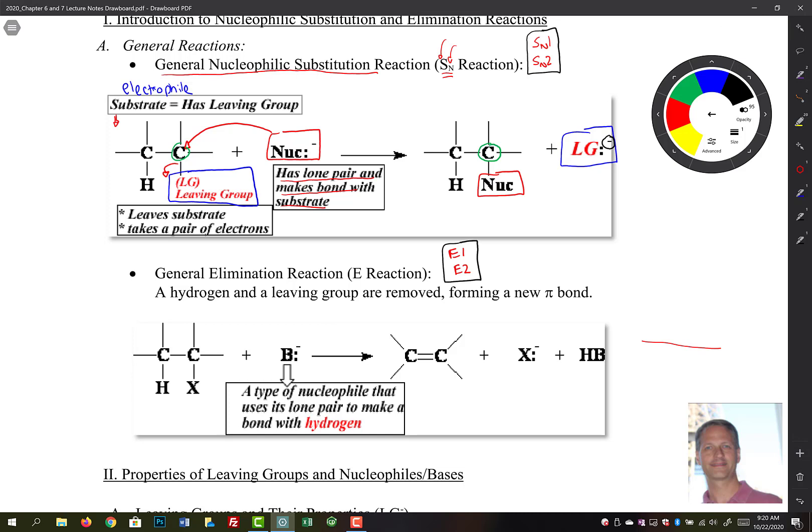But the general idea here is you have a substrate. So here again is our substrate. And the substrate is going to have some type of, again, a leaving group on it. So I wrote an X right here for a halogen. But in theory, it could be a variety of different types of leaving groups that we'll go over and we'll talk about as we go through this chapter.